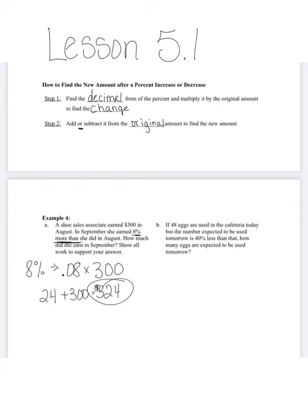And now in Part B, we have the problem. If 48 eggs are used in the cafeteria today, but the number expected to be used tomorrow is 40% less than that, how many eggs are expected to be used tomorrow. So again, step one, we've got our 40%. We are going to write that out as a decimal, which is 0.40 or 0.4. And 0.4 times that original amount of 48 equals 19.2.